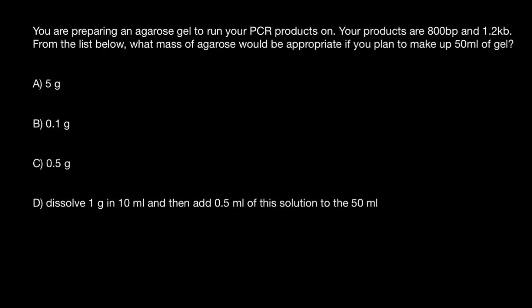Hello and welcome to Nikolai's genetics lessons. Today we are going to talk about laboratory calculations. Here's a problem: You're preparing an agarose gel to run your PCR products on. Your products are 800 base pairs and 1.2 kilobase. From the list below, what mass of agarose would be appropriate if you plan to make up 50 milliliters of gel?